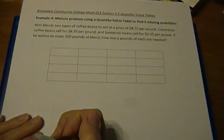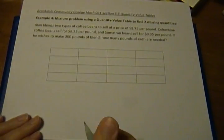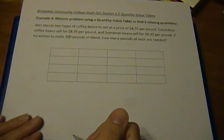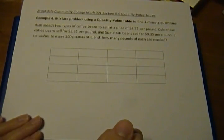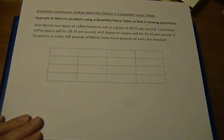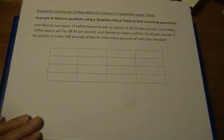Okay, so now we have example four, a mixture problem that uses a quantity-value table to find two missing quantities. Alan blends two types of coffee beans to sell at a price of $8.75 per pound. Colombian coffee beans sell for $8.35 per pound, and Sumatran beans sell for $9.35 per pound. If he wishes to make 300 pounds of blend, how many pounds of each are needed?